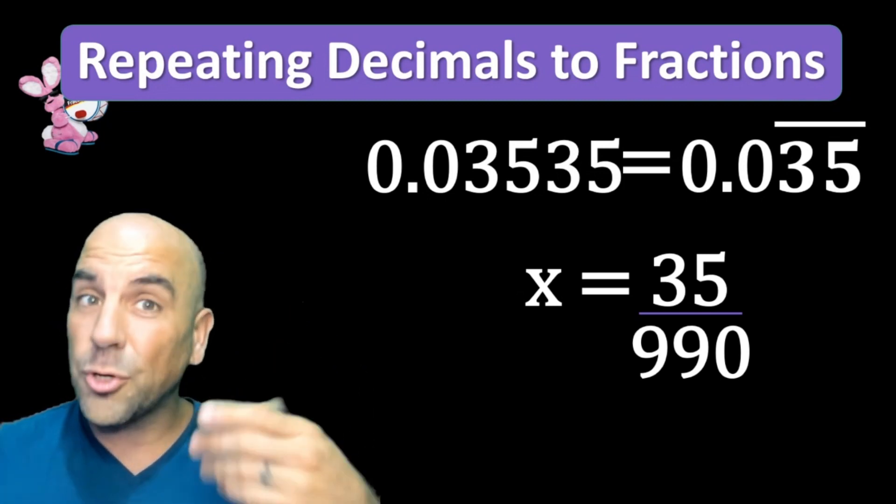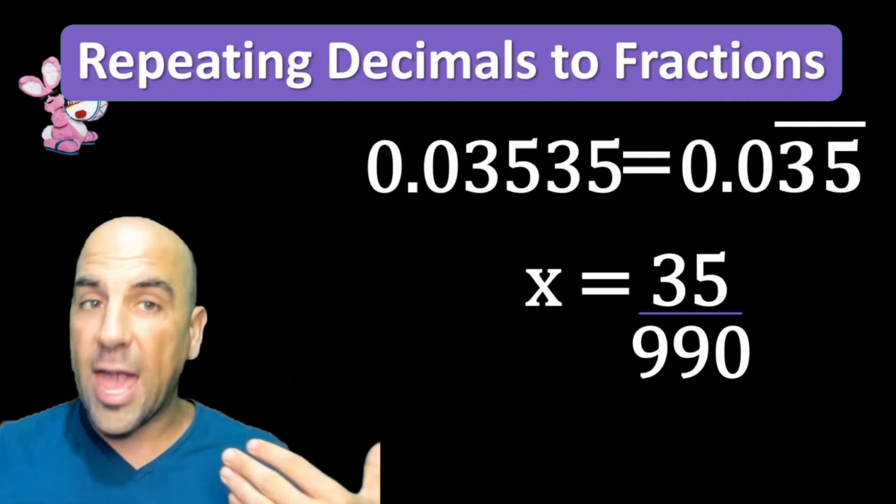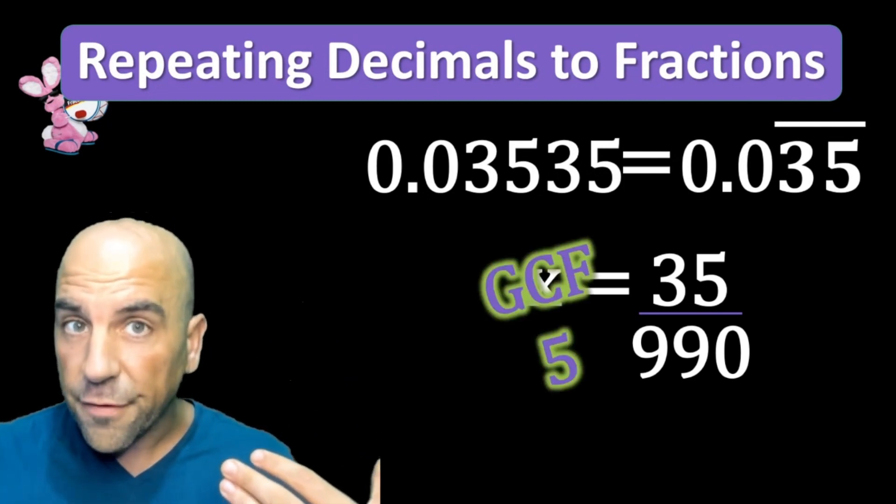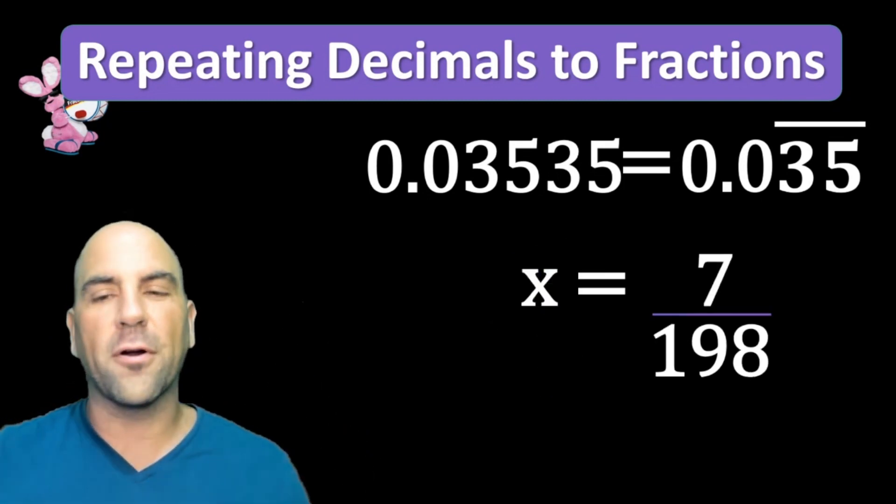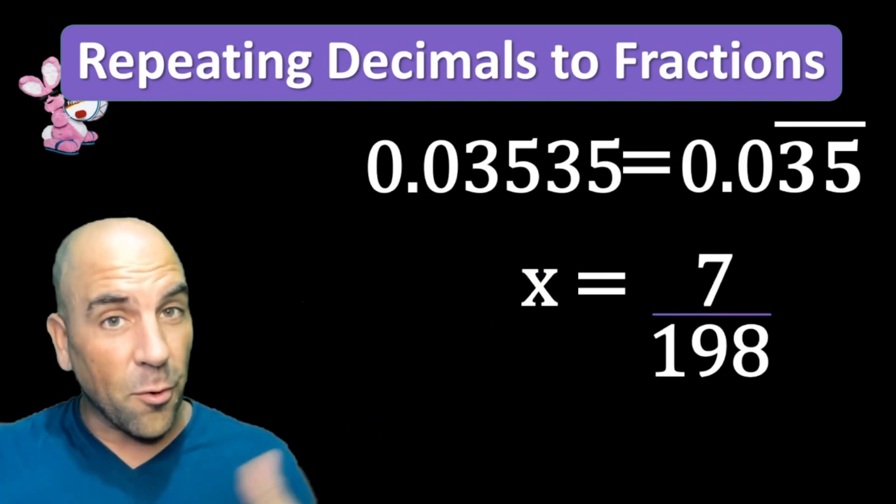One ends in 5, one ends in 0. You know both of them have a factor of 5. So our actual answer in simplified form is 7/198.